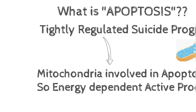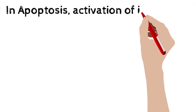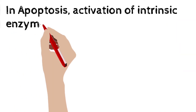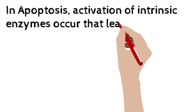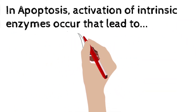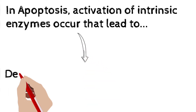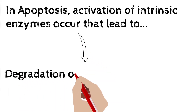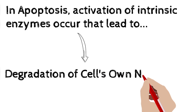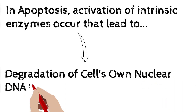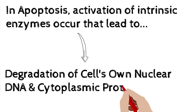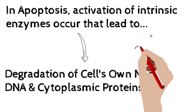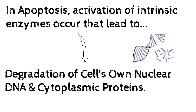In apoptosis, there will be activation of many intrinsic enzymes, and that will lead to a degradation of the cell's own nuclear DNA and the cytoplasmic proteins. So in apoptosis, you will have damage of your nuclear DNA and damage of cytoplasmic proteins.